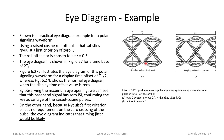Here is an eye diagram example for an actual pulse using a raised cosine filter with a roll-off factor of 0.5, and polar signaling with plus one and minus one values. This is what you would typically see for a polar waveform with that raised cosine filter.